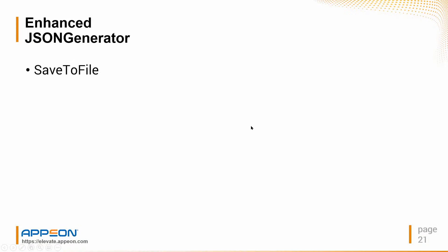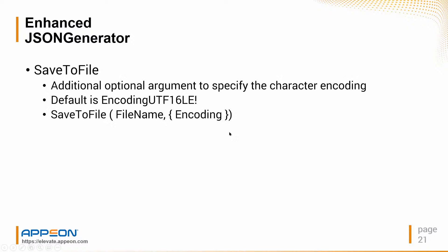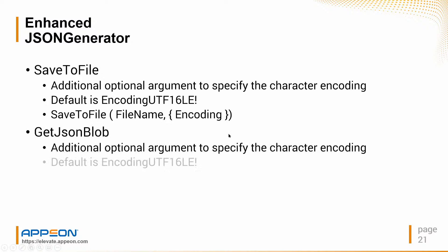Some new features have been added to the JSON generator. There's a new save to file function with an additional optional argument to indicate the encoding — the default is UTF-16LE, which is generally not the format you want for JSON. Usually it will be UTF-8. Similarly, getJSONBLOB has an argument to indicate encoding. The default is UTF-16LE, which is PowerBuilder's internal default, but when sending JSON to other services you'll want to use UTF-8.